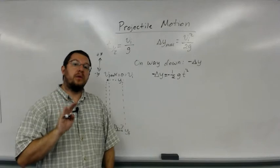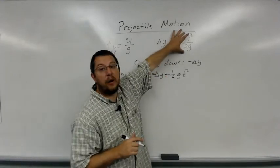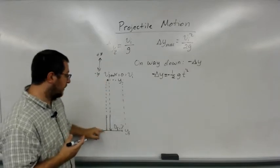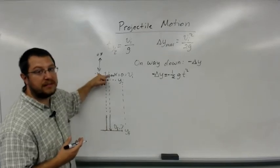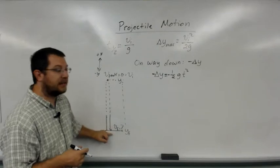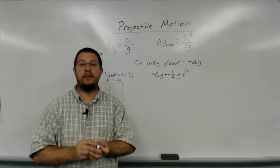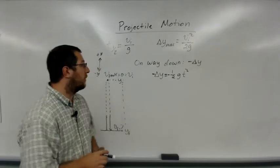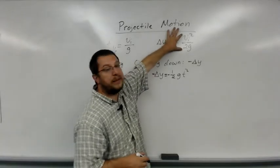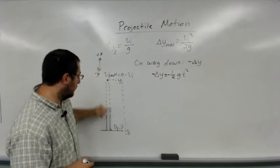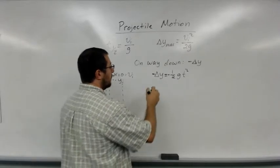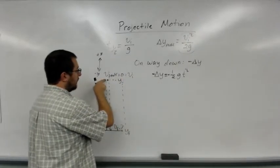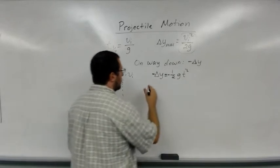Here's what we're going to do. The displacement upward must be the same as the displacement downward. If I launch something from the ground, to the ground it will return. So this must be the same distance from here to here. I can insert this expression for the displacement, vi²/2g, only with a negative sign.